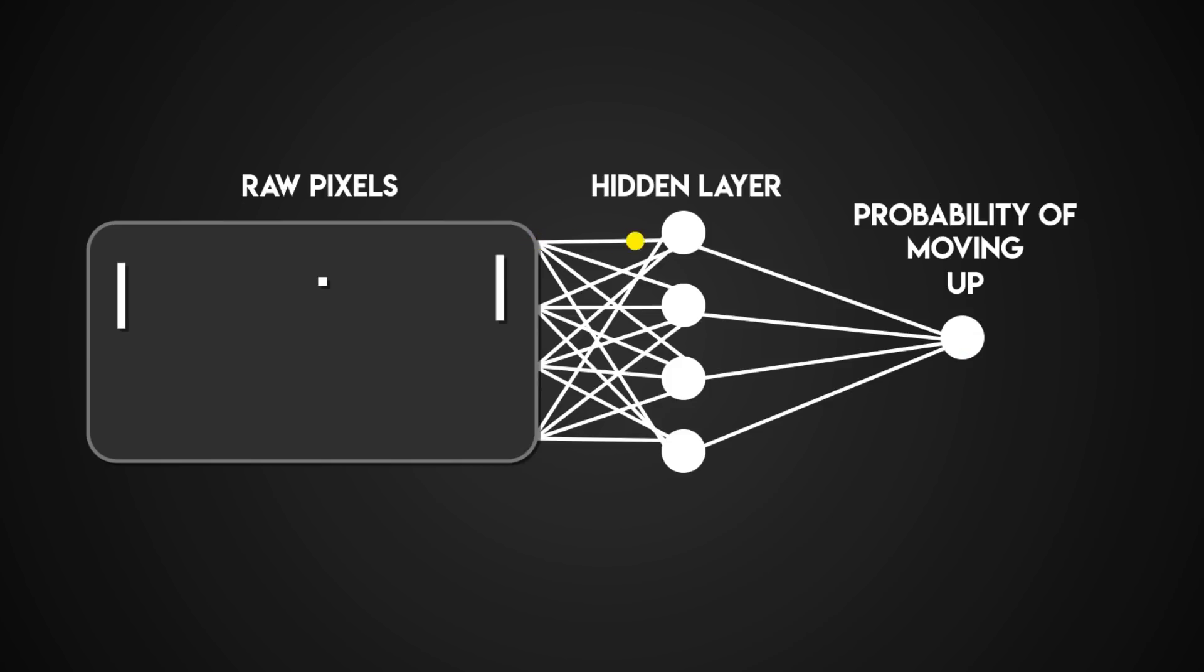Since we only have two layers, the neurons in the hidden layer will be able to detect various game states, like if the ball is on top or our paddle is in the middle, and the neurons in the next layer can then decide in each case if we should be going up or down.